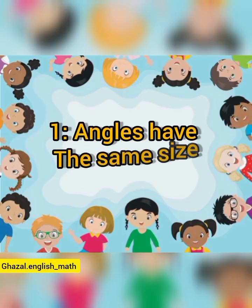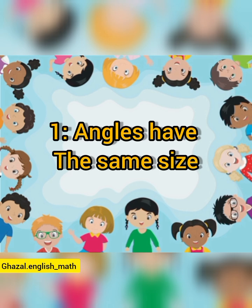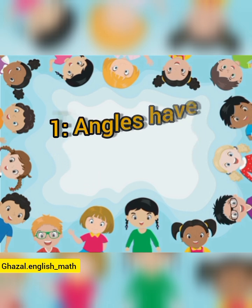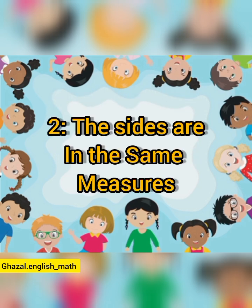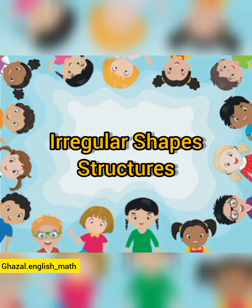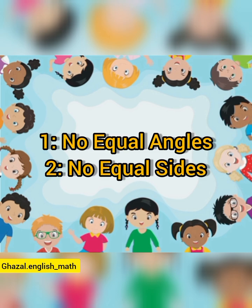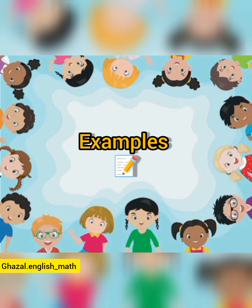Regular shape: in a regular shape, angles have the same size and the sides are the same measure. But on the other hand, irregular shapes have no equal angles and no equal sides.